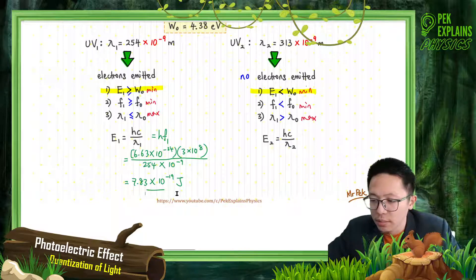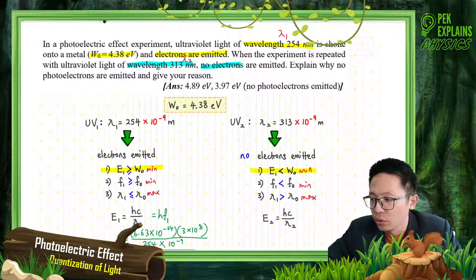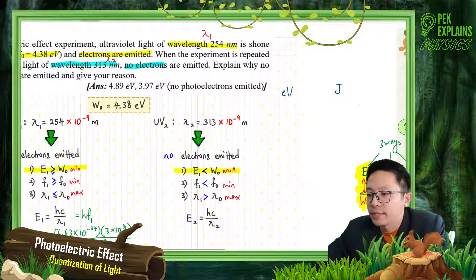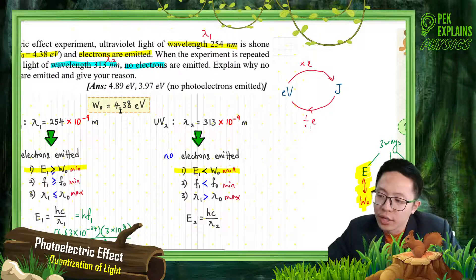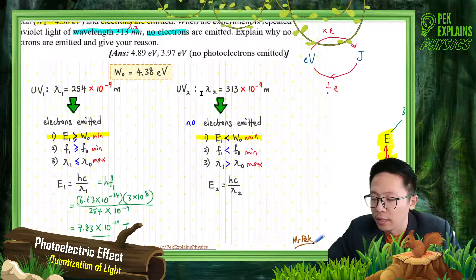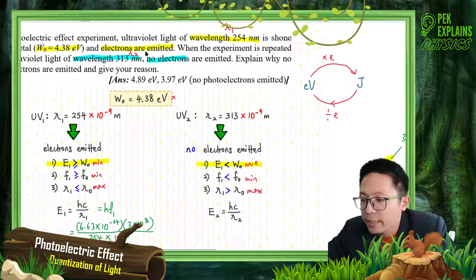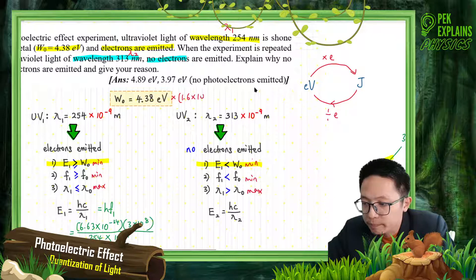Now the work function is given in electron volts, so we need to convert it to joules to compare with the same unit. To convert from electron volts to joules, multiply by the electron charge. From joules back to electron volts, divide by the electron charge. So the work function is 4.38 eV multiplied by 1.6 × 10⁻¹⁹.